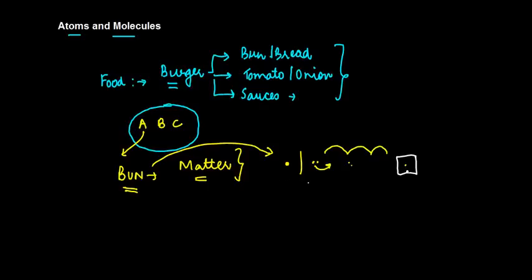You reach a situation where whatever you get after division is so small that you cannot divide it further. This smallest state which cannot be divided any further is known as an atom. The meaning of atom is something which is indivisible.